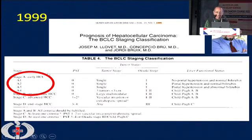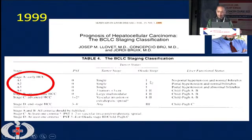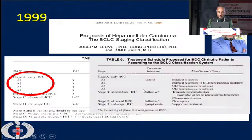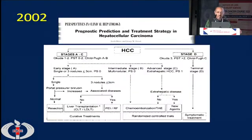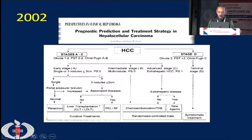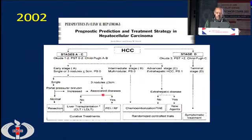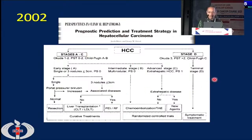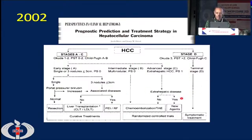In that initial BCLC staging, stage A was divided into four groups and the main modality of treatment used to be surgical resection. The next edition of BCLC staging came in 2002, where we see that familiar algorithm — stage is given on the top and treatment modalities below. They divided into stage A to C for active treatment, and stage D where only palliative or symptomatic treatment would be given.